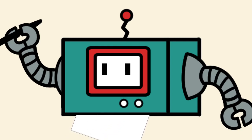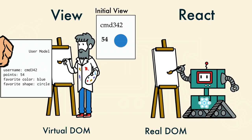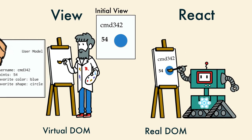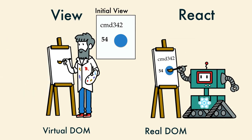React had very accurate and fast memory banks. It could remember exactly what was already painted in the real DOM. At first, the DOM was empty, so it knew to paint the whole thing.